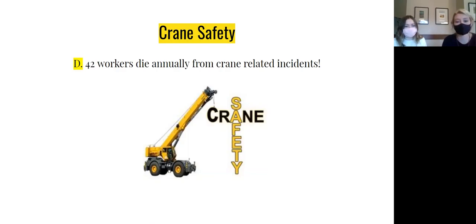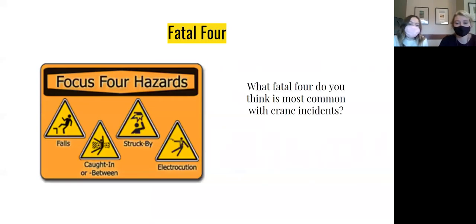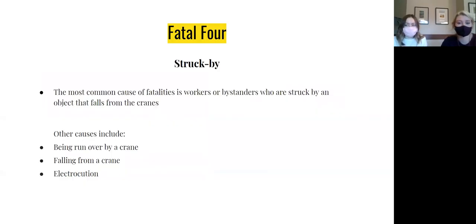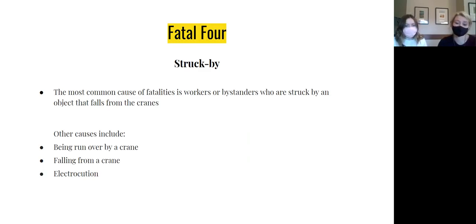In many cases, in one crane accident, there are usually multiple fatalities. The top four construction fatalities are falls, struck by, caught in-betweens, and electrocutions. The most common cause of fatalities is workers or bystanders who are struck by an object that falls from the crane. Some of the other causes of death are being run over, falling from a crane, and electrocution.